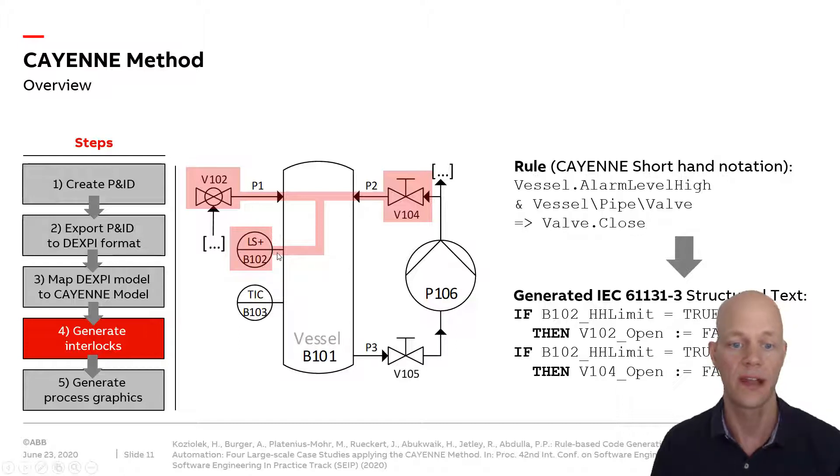We can extract this from the topology model. We scan for all the level sensors on tanks and check whether they have alarm limits defined. Then we trace back the topology via the pipes and see if there are valves on all the inlets of the tank. We have a shorthand notation in the CAYENNE method for these rules that lets you express very simply these topological combinations.